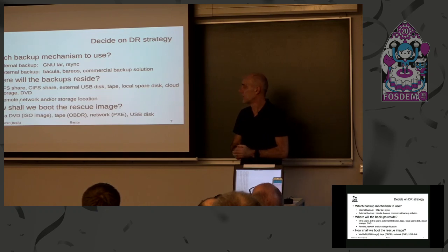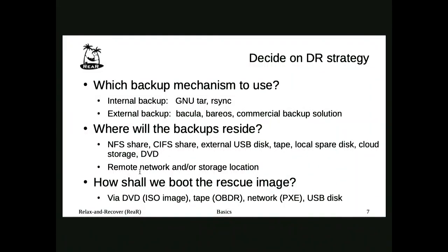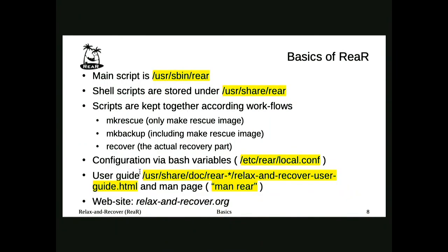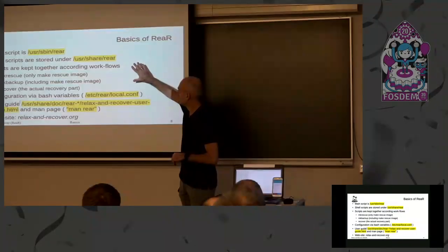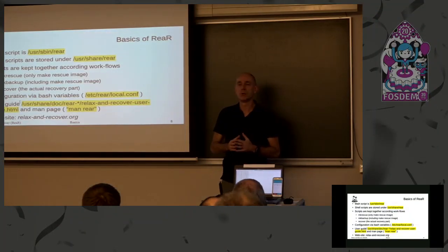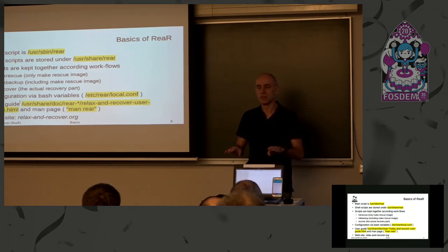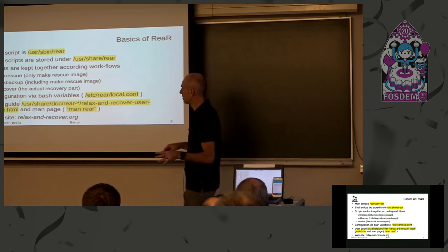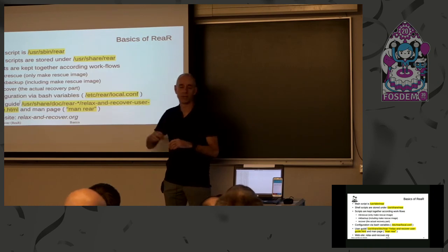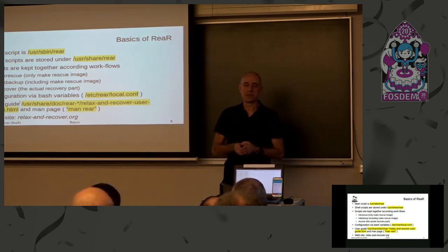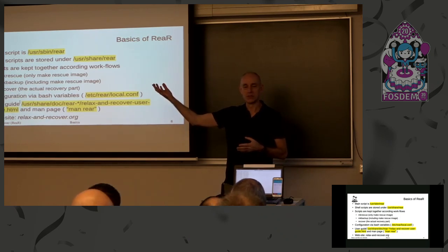Once you've made your decisions, you start configuring ReaR in the configuration files. Everything in ReaR is Bash, including the configuration files — they're variables, but if code is missing you will get an error. The main commands are mkrescue or mkbackup. mkrescue only makes the disaster recovery image with no backup. mkbackup includes both the rescue image and the backup. If you're using an external backup, mkbackup is essentially the same as mkrescue, because you rely on external backup interfaces for your full system backup and don't need ReaR to take an extra backup.